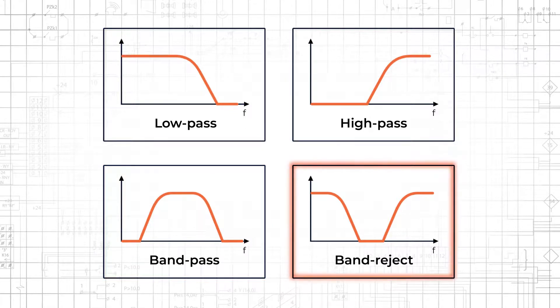While a band-reject filter passes all frequencies except those that fall within a relatively narrow range and is useful when suppressing a single or small range of frequencies, such as AC power frequencies.